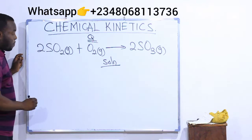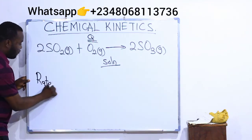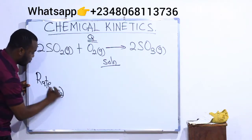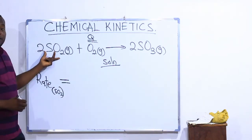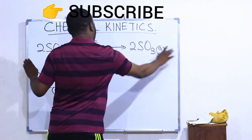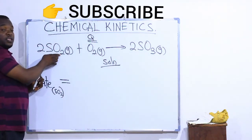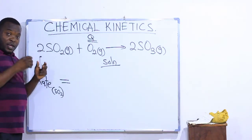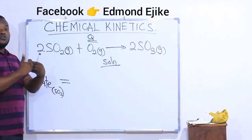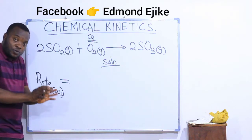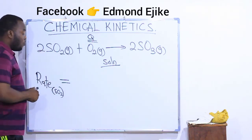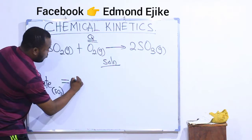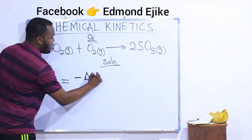We are going to start with SO2. The rate of reaction with respect to SO2 — as you can see, SO2 is on the reactant side, and this is my product side. Because SO2 is on the reactant side it will carry a negative sign. Remember, reactants decrease as the reaction goes on; the quantity of the reactants keeps decreasing while the reaction proceeds.